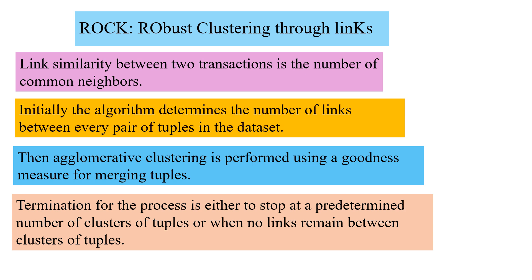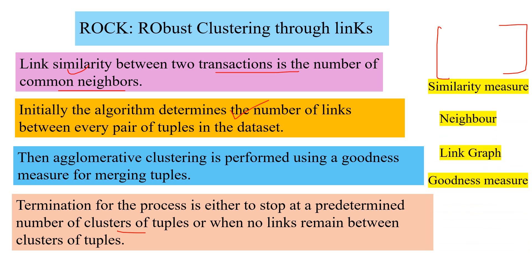What were the main steps? The link similarity between two transactions is the number of common neighbors. Just a brief overview of ROCK: the number of links between pair of tuples, we took an example of link T1, T2. You would do this for all tuples so that you get a matrix. Then agglomerative clustering is performed using a goodness measure for merging tuples. Termination is either stop at a predetermined number of clusters or when no links remain between clusters. These were the important concepts which we studied today.